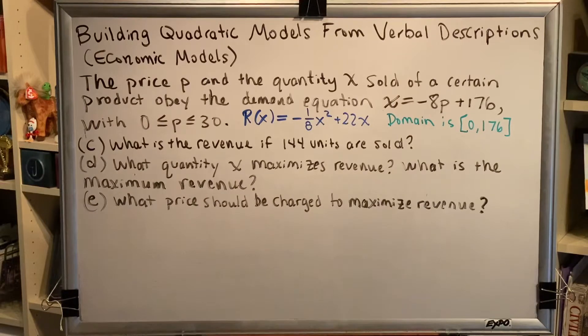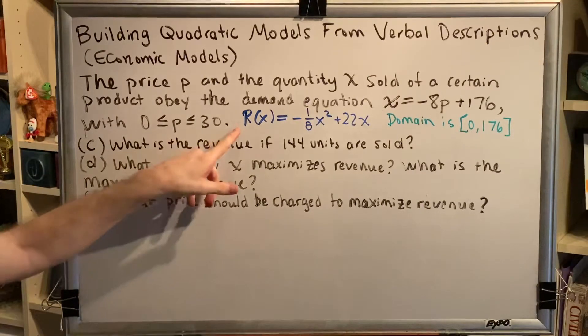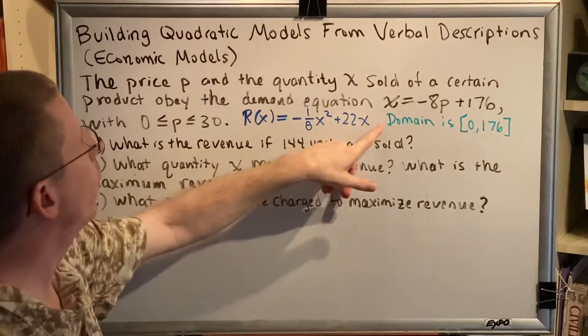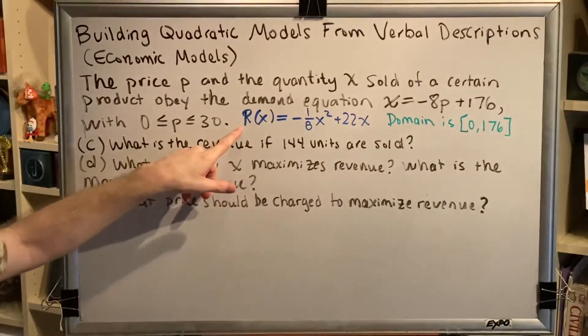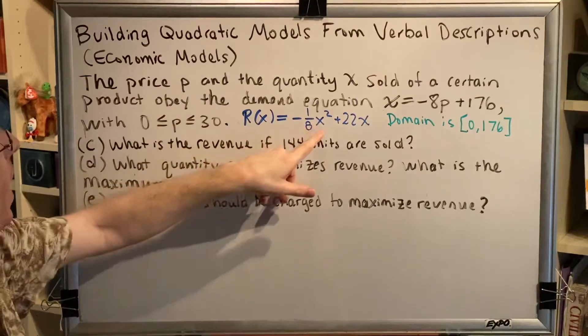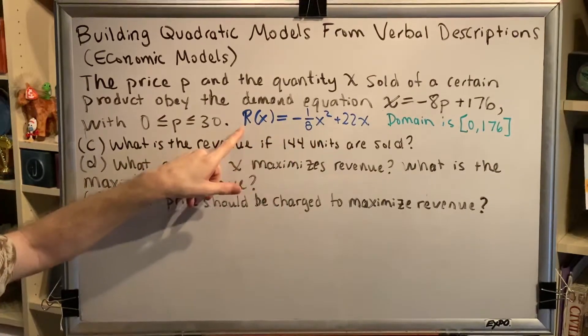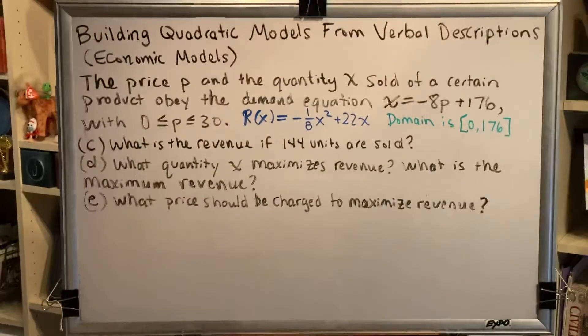Part C says what is the revenue if 144 units are sold. So I've placed the result from part A here in blue and from part B here in green. The equation from part A allows us to find the relationship between X, the quantity sold, and R, the revenue. If someone gives us one, we can find the other.